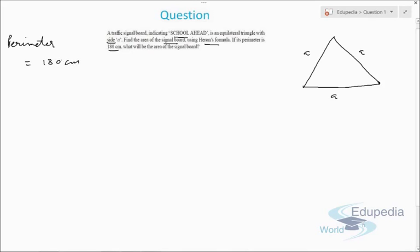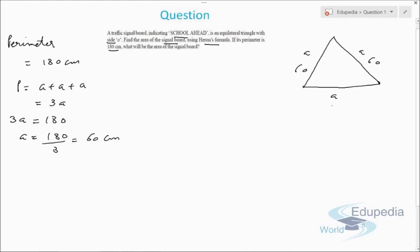The perimeter is given as 180 centimeters. Perimeter is the sum of all sides, so it will be a + a + a = 3a. This means 3a = 180, so a = 180 ÷ 3 = 60 centimeters. So each and every side is 60 centimeters.